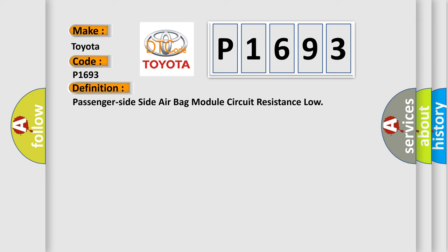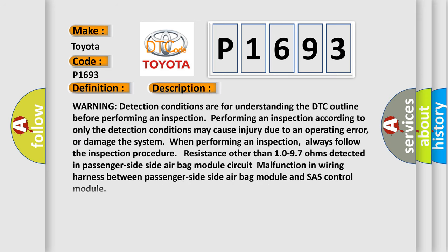Here is a short description of this DTC code. Warning: detection conditions are for understanding the DTC outline before performing an inspection. Performing an inspection according to only the detection conditions may cause injury due to an operating error, or damage the system. Always follow the inspection procedure. Resistance other than 10 to 97 ohms detected in passenger side airbag module. Circuit malfunction in wiring harness between passenger side airbag module and chassis control module.